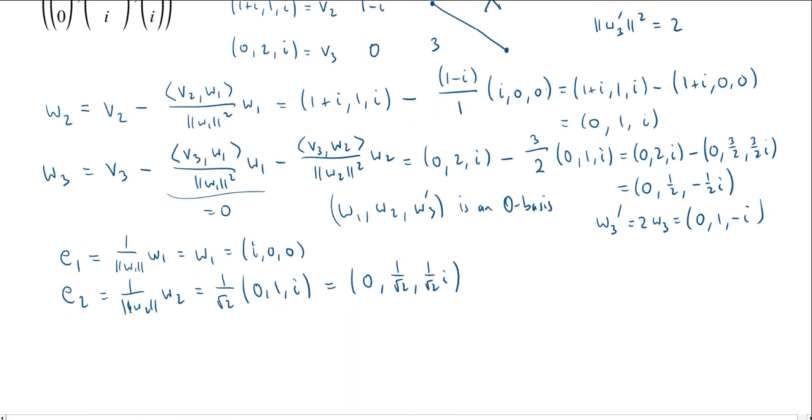Finally, we get our E3. This is 1 over the length of W3 prime times W3 prime. We said the square is 2, so the length is the square root of 2. So 1 over root 2 times 0, 1, negative i. This gives us 0, 1 over root 2, negative 1 over root 2 i.